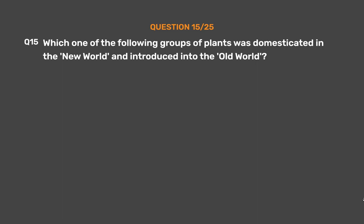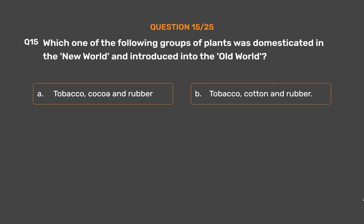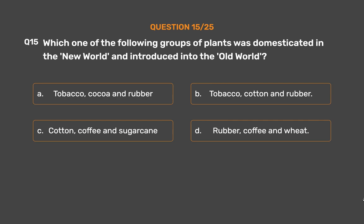Question No. 15: Which one of the following groups of plants was domesticated in the New World and introduced into the Old World? Option A: Tobacco, Cocoa and Rubber. Option B: Tobacco, Cotton and Rubber. Option C: Cotton, Coffee and Sugarcane. Option D: Rubber, Coffee and Wheat.